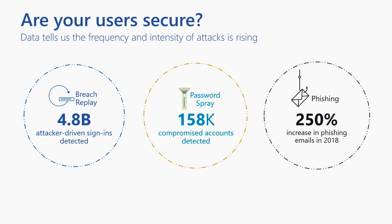A phishing attack typically comes in the form of email where the attacker attempts to trick the user into clicking on a link or entering their credentials into a malicious web page. Not only is phishing increasing in frequency, but its average success rate is about 15%. With a combination of these very common attacks that use passwords as their primary vector, you can see how quickly an attacker could use these methods to compromise a significant portion of your users.